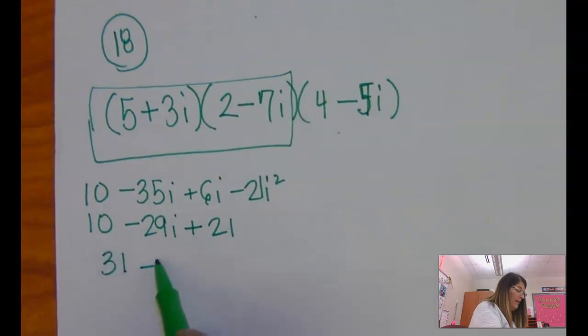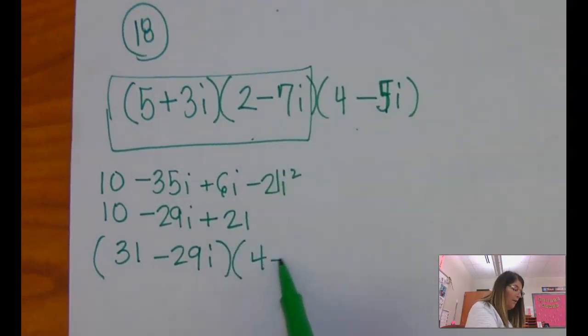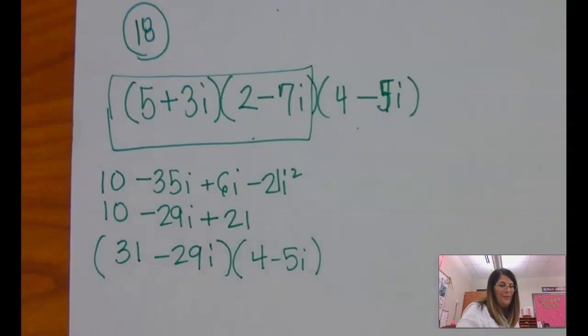So I have 31 minus 29i. Now that's what this stuff in the box becomes, but now I have to foil it out with this. It's just foiling again.